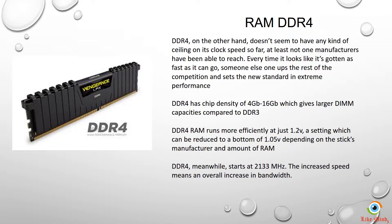DDR4 RAM runs more efficiently at 1.2 volts compared to DDR3, and this can be reduced down to 1.05 volts depending on the manufacturer and RAM capacity. DDR4 starts at 2133 MHz, right where DDR3 ends, meaning the increased speeds result in an overall increase in bandwidth.